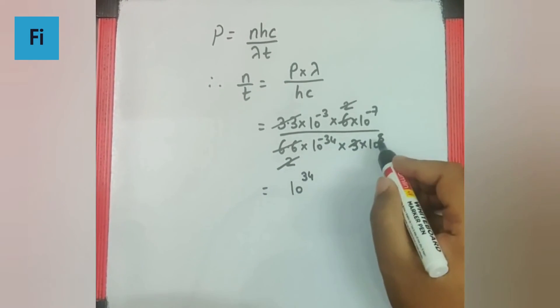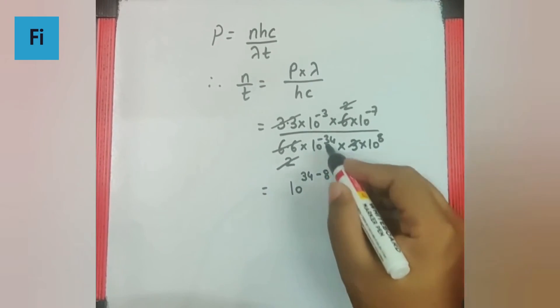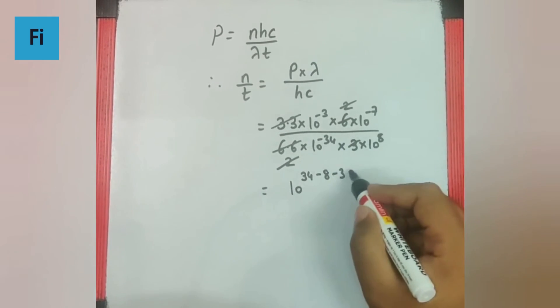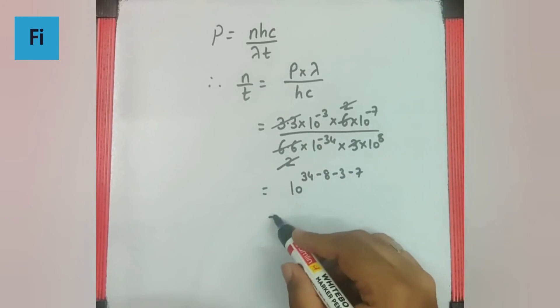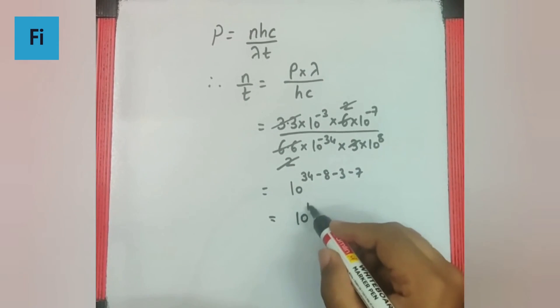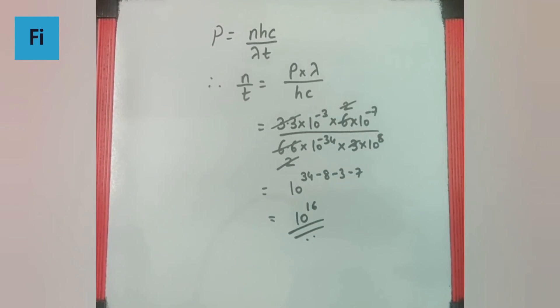up becomes +34, 8 goes up becomes -8, -3, -7. So when you calculate this you get 10^16 as our final answer.